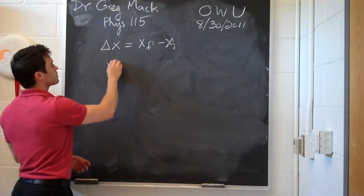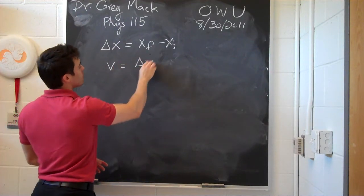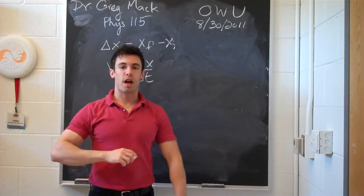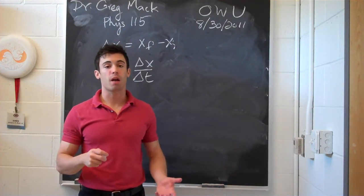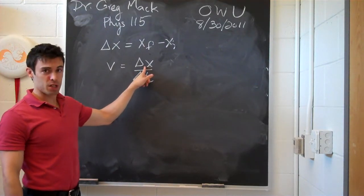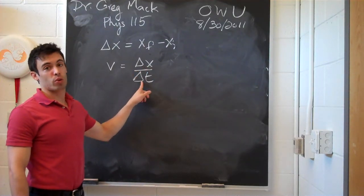The velocity is how fast it has done that, meaning how much ground it's covered in a given period of time. So that would be its displacement, its total displacement, divided by its total time.